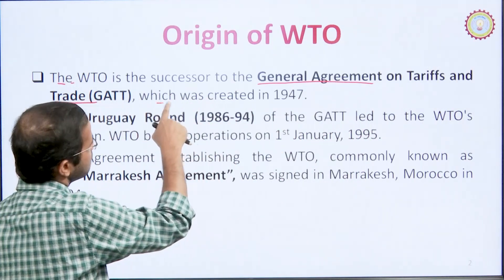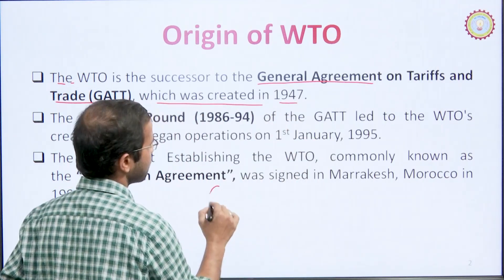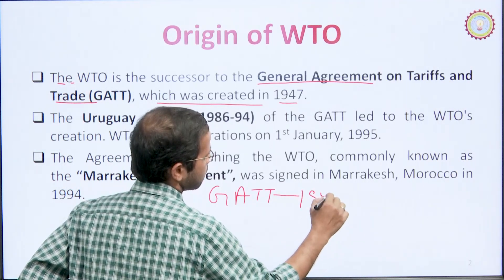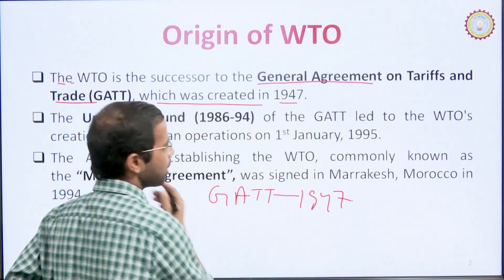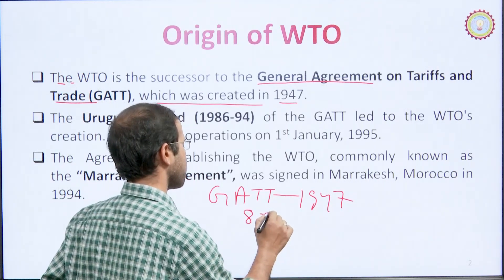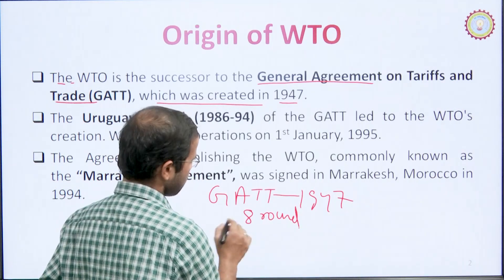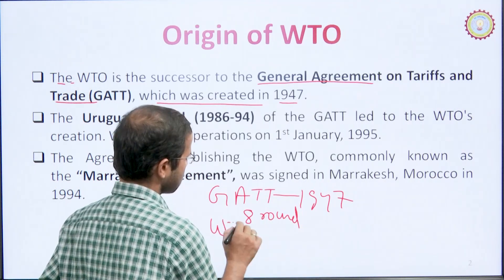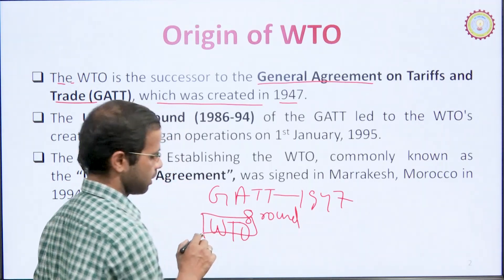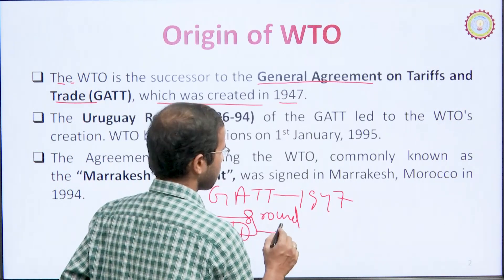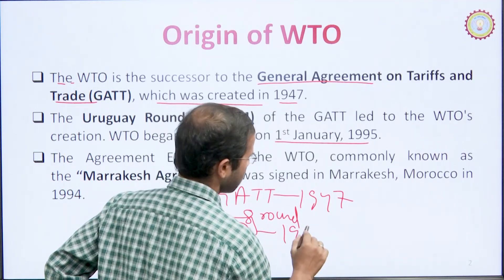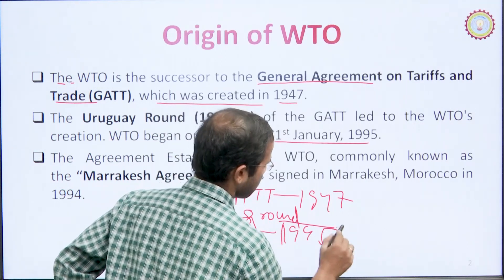GATT was created in 1947. After that, eight rounds of meetings were held. After those eight rounds, a new organization was formed as a permanent body for international trade. It came into existence on 1st January 1995.